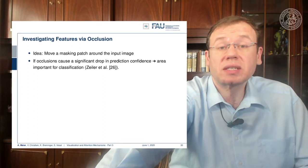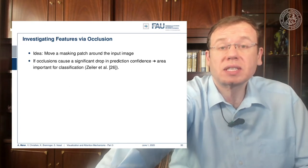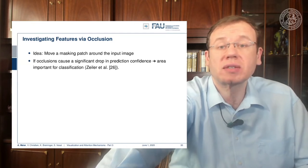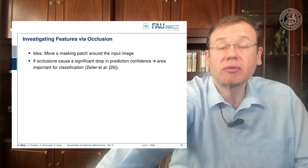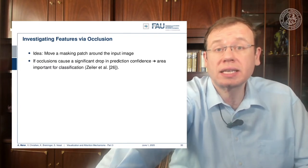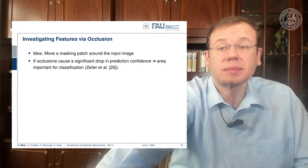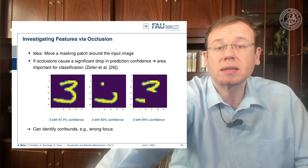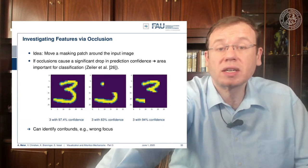We can also investigate features via occlusion. The idea is that you move a masking patch around the input image — with this patch you remove information from the image — and then you try to visualize the confidence for a specific decision with respect to the different positions of this occluding patch. Areas where the patch caused a large drop in confidence are probably areas related to the specific classification. We have an example here: we mask the original input and you can see that the reduction in confidence for the number three is much larger in the center image than on the right-hand side image.